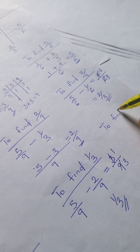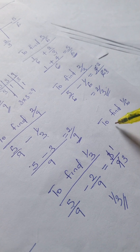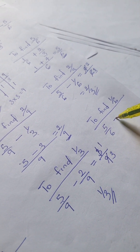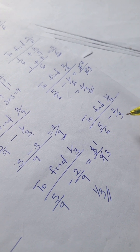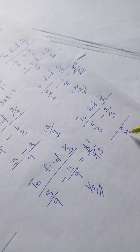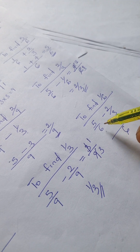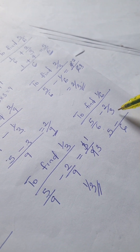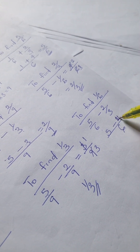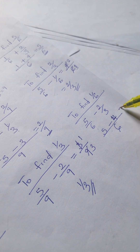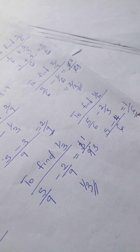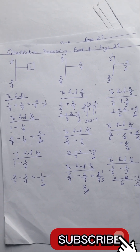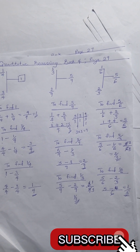To find 1/6, we have 5/6 minus 2/3. Our LCM is 6. Six divided by 6 is 1, times 5 is 5; minus 6 divided by 3 is 2, times 2 is 4. Five minus 4 gives us 1 over 6. That's all for this problem. Do well to like and subscribe to this channel for more quantitative reasoning solutions and mathematics problems. Bye for now.